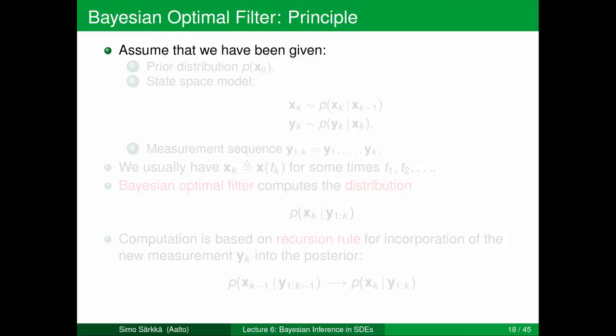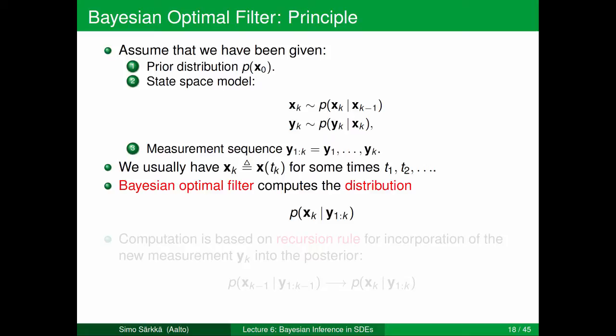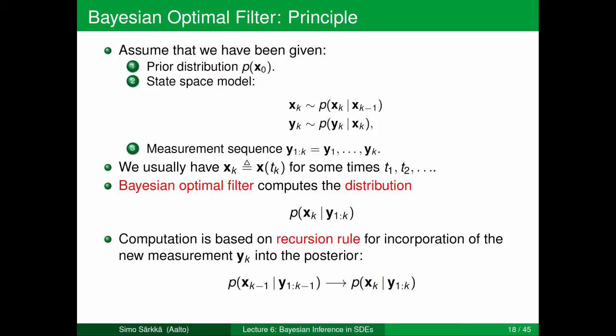How does the Bayesian optimal filter look? We have the prior distribution at hand, the state space model consisting of the dynamic model and measurement model, and the measurement sequence. Given this information we want to compute the filtering distribution. In the continuous-discrete case with SDE models, xk is a shorthand notation for x at tk. The times don't need to have uniform sampling — they just need to be an increasing sequence. The Bayesian optimal filter is the algorithm which computes the filtering distribution p(xk | y1:k). The filter is a recursive rule for incorporating the new measurement yk into the posterior from the previous step, updating from p(xk-1 | y1:k-1) to p(xk | y1:k).